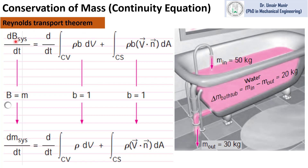B represents the extensive property of a system, whereas small b is the property of a system per unit mass. For the continuity equation, we will replace B with M and small b is equal to 1, because M divided by M is equal to 1.